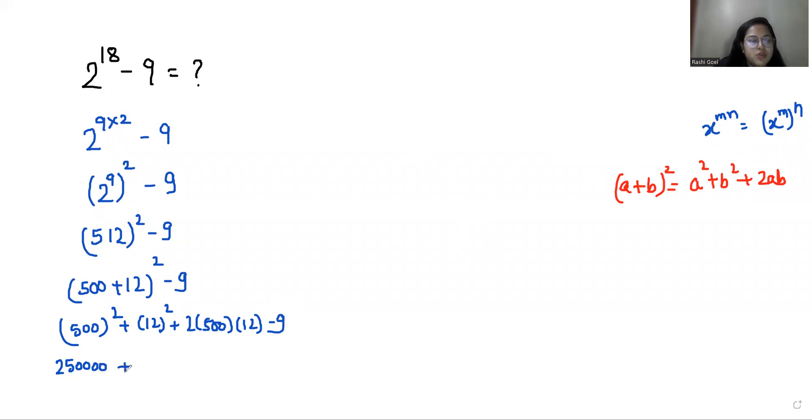When we add all these three terms we get 262,144 - 9, which equals 262,135. This is our final answer.